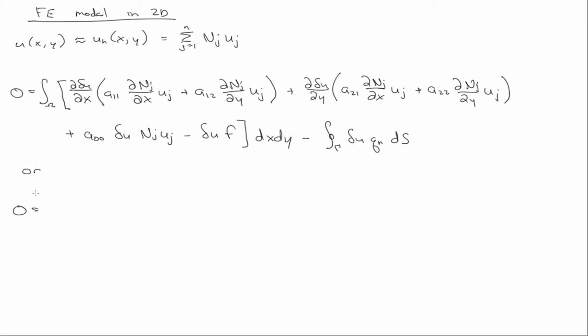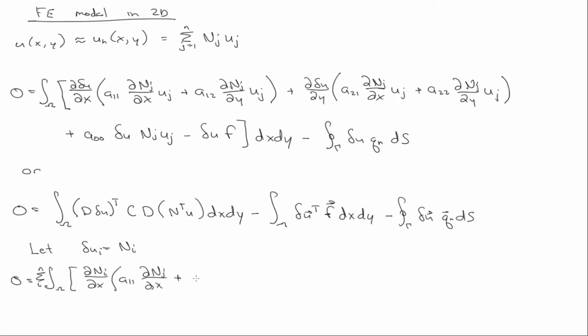Or, using that vector notation, write it much more compactly. And we pulled the constant u_j out here.